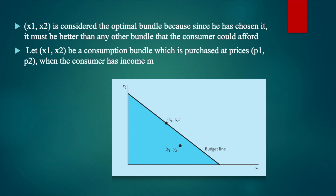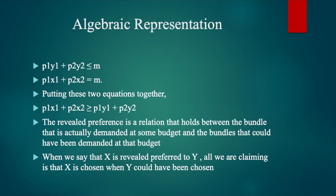At the same time, when we look at the bundle y1, y2, it lies inside the budget line and the total income of the consumer is not being exhausted. So this means that P1·y1 + P2·y2 is less than or equal to M. In our particular example, P1·y1 + P2·y2 is less than M as the bundle y1, y2 lies inside the budget line. But the idea of revealed preference holds even if y1, y2 is equal to M — meaning even if y1, y2 was on the budget line — as long as x1, x2 is preferred to y1, y2.